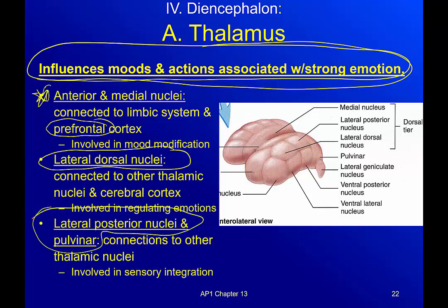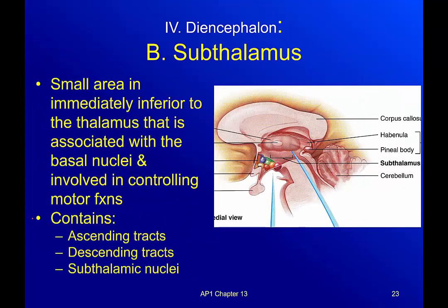The lateral posterior nuclei and the pulvinar are involved in sensory integration — not just feeling something, but interpreting whether it's a good feeling or a bad one. Is the pressure crushing my foot, or is it my boyfriend squeezing my hand? It's about the feeling behind the sensation: do I like it or not? That's sensory integration.